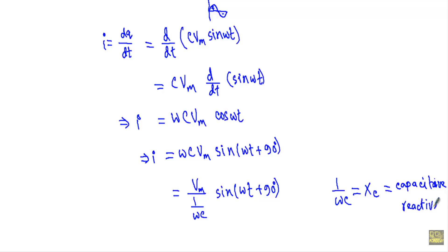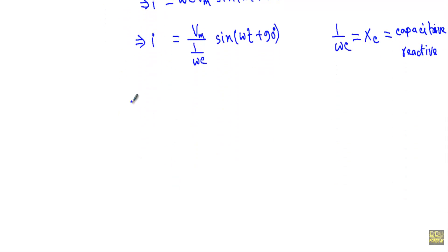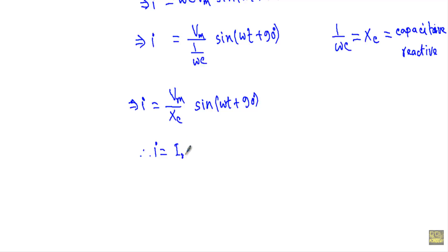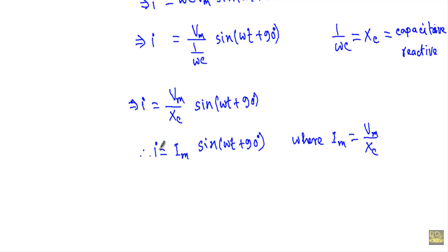I will talk about capacitive reactance in a separate video. Our instantaneous current I will be equal to Vm divided by 1/(ωC). Since 1/(ωC) is known as capacitive reactance Xc, I can write the instantaneous current I equal to Vm/Xc · sin(ωt + 90°). Here, Vm/Xc is the maximum value of current Im, so I equal to Im·sin(ωt + 90°). Im is the ratio of maximum voltage and the capacitive reactance of the circuit. So these are the voltage and current equations of the pure capacitive circuit.